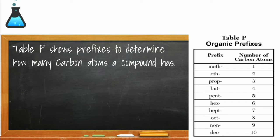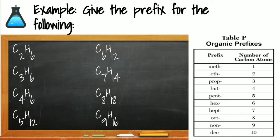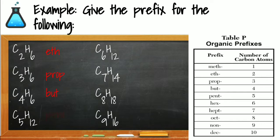Reference table P will help us name structures in the homologous series because it gives us the prefix used to indicate the number of carbon atoms. In the first compound, C2H6, two carbons means its prefix will be eth. In the next structure, C3H6, the prefix will be prop. Four carbons is but, five carbons is pent. Six carbons is hex — we use the same prefixes as in geometry — seven is hept, eight is oct, and nine is non.